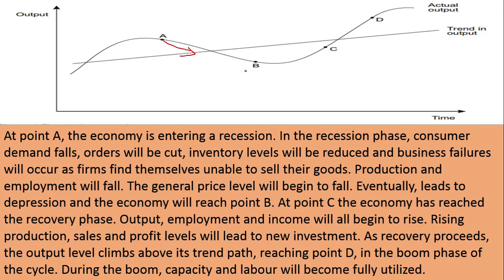Eventually, this continues until it reaches point B — the depression phase. This is a total downward movement that will continue if no concrete measures are taken by the government, making things worse. After depression, the government takes action, and at point C the economy reaches the recovery phase. When things are at their worst, good things start happening after that.